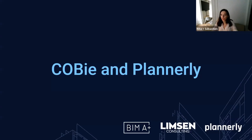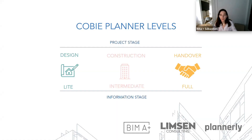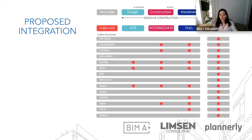Now if we jump into Plannerly - how it was done and developed - I'll give you a quick overview of how it works inside. We decided to be easier and to propose three levels connected to project stages: light, intermediate, and full. We think it's easier to have information delivered in steps or milestones rather than all at the end. Here you can find which COBE worksheets were included at each stage. This is our proposal, and of course it could be customized with the opinion of the client or owner or feedback from the industry. We would start with only three worksheets, then have a few more, and then a few more again in the full stage.